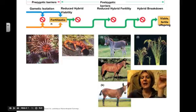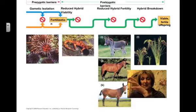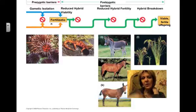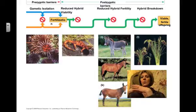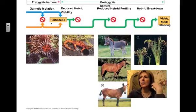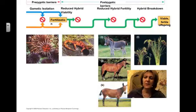Another example is reduced hybrid fertility. We've talked about mating a horse with a donkey and getting a mule. Mules are very vigorous, but unfortunately in a great number of cases they're not fertile, so they would not pass our test for what is a species. And then you can have hybrid breakdown, where in plants you would have a hybrid that was very vigorous for the first couple of generations, and then you would have reduced viability — those organisms wouldn't be very strong, they would succumb to disease.